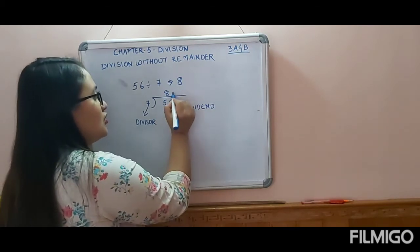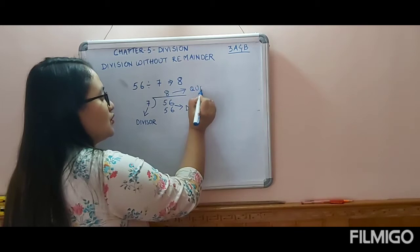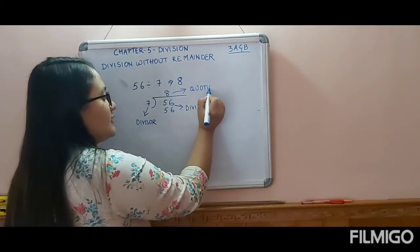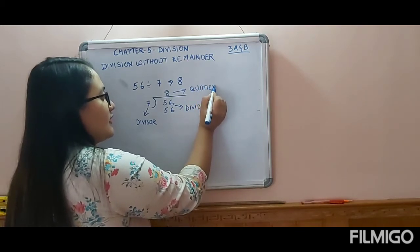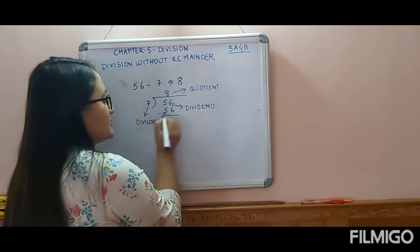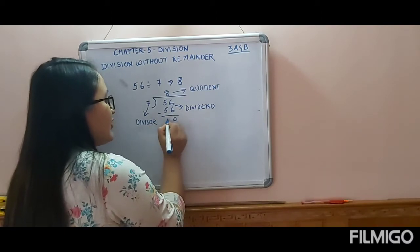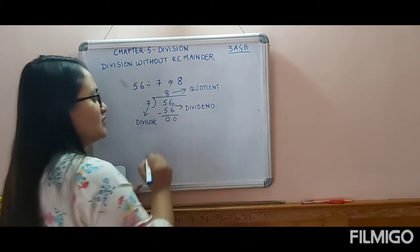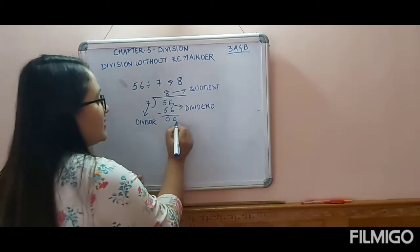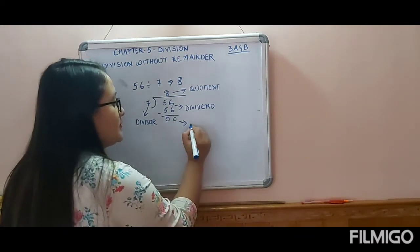The answer we write on top is your quotient, Q-U-O-T-I-E-N-T. Then we minus: 56 minus 56 gives 0. Whatever we get here at the bottom is your remainder — in this case, the remainder is 0.